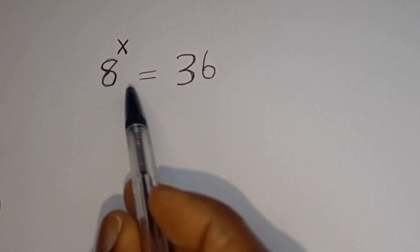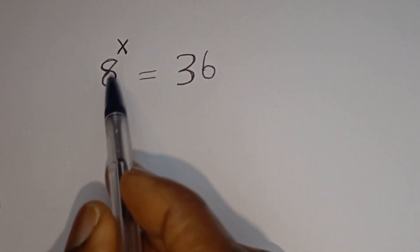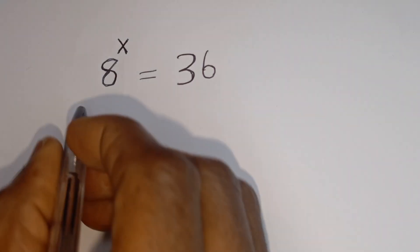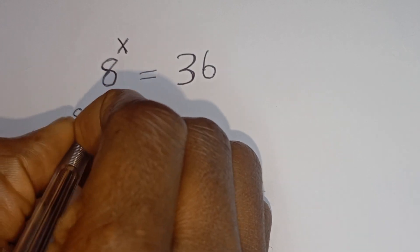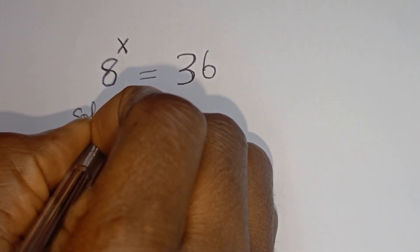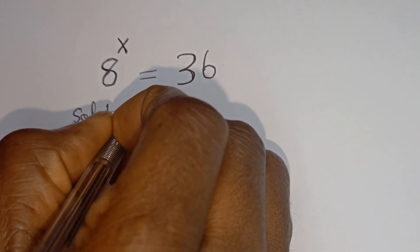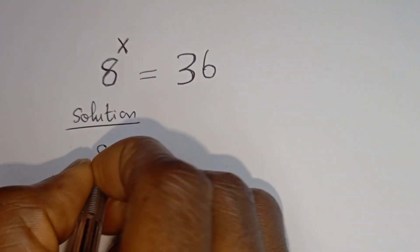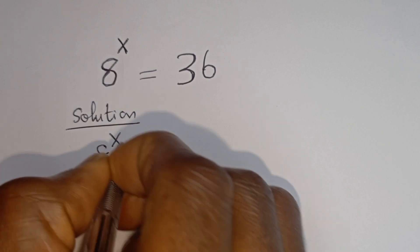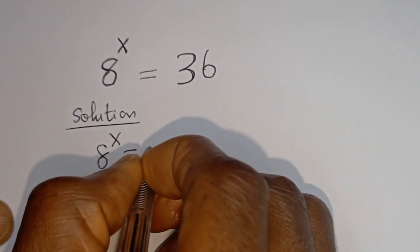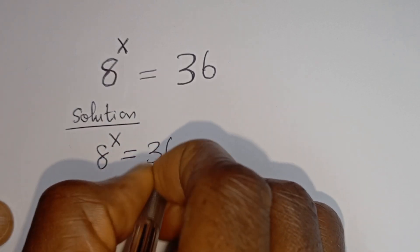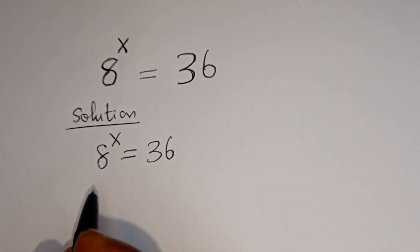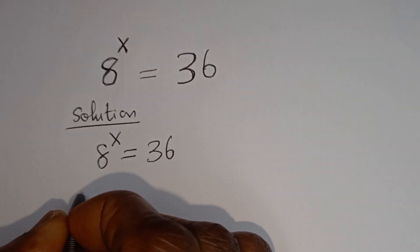Hello, how to solve for x in this equation: 8 to the power of x is equal to 36. We have 8 to the power of x is equal to 36. Let's take the log of both sides.